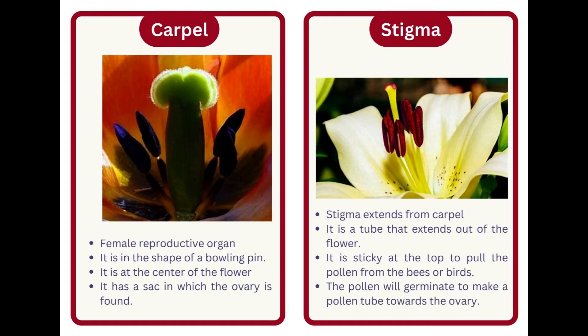Carpel. The female reproductive organ. It is in the shape of a bowling pin and is at the center of the flower. It has a sac in which the ovary is found.